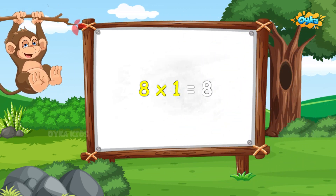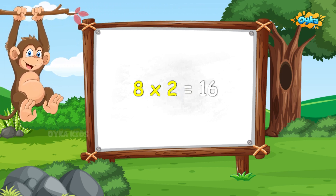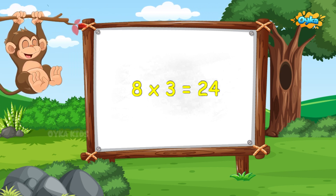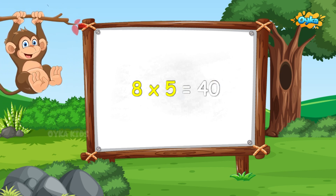8 1s are 8, 8 1s are 8, 8 2s are 16, 8 2s are 16, 8 3s are 24, 8 3s are 24, 8 4s are 32, 8 4s are 32, 8 5s are 40, 8 5s are 40.